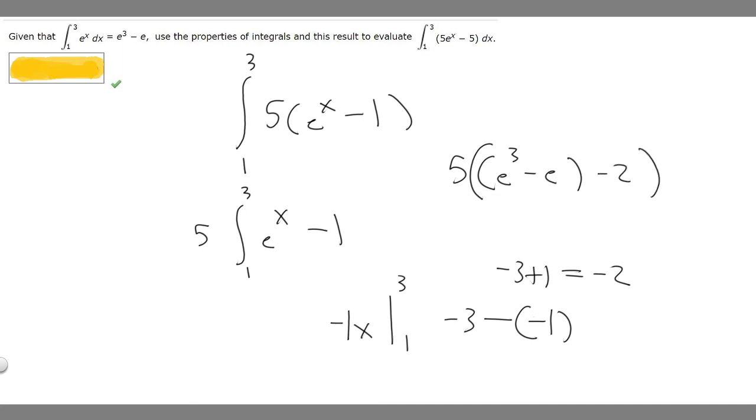And all we have to do is multiply. So this becomes 5 times the quantity e to the 3 minus e. And then minus 2 times 5 is minus 10. So 5 times e to the 3 minus e minus 10 is the answer to this problem.